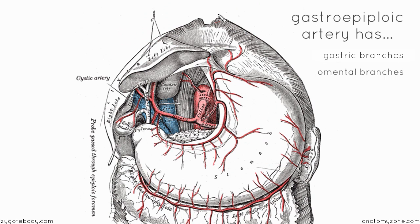Switching back to this diagram with the stomach in its normal orientation: you've got the splenic artery here and it's got this long, tortuous course and it enters the hilum of the spleen. It gives off the little short gastric arteries to the fundus of the stomach and it also gives off the left gastroepiploic artery.